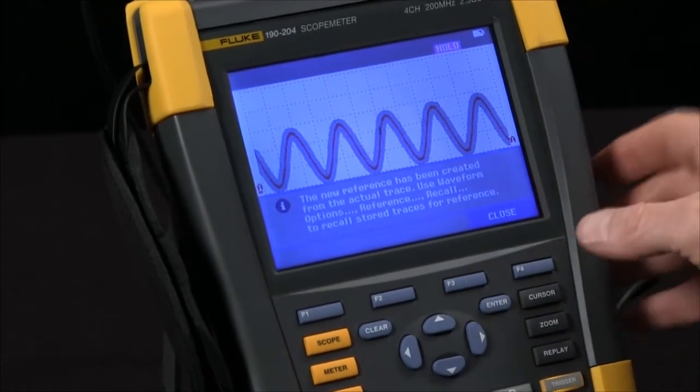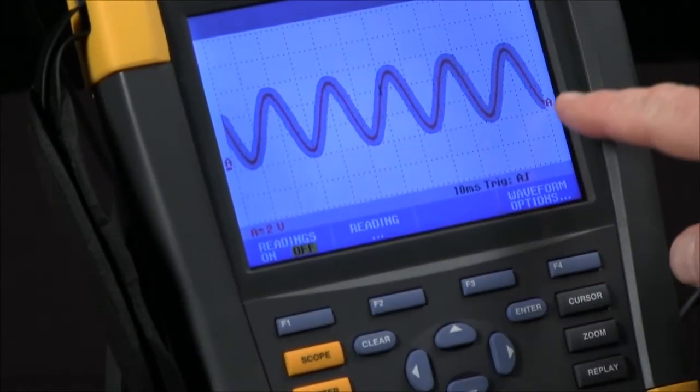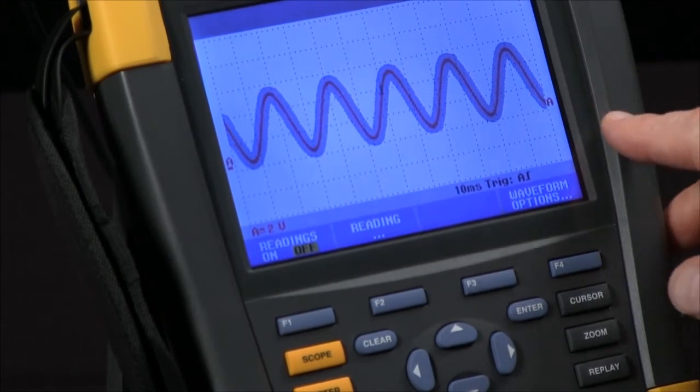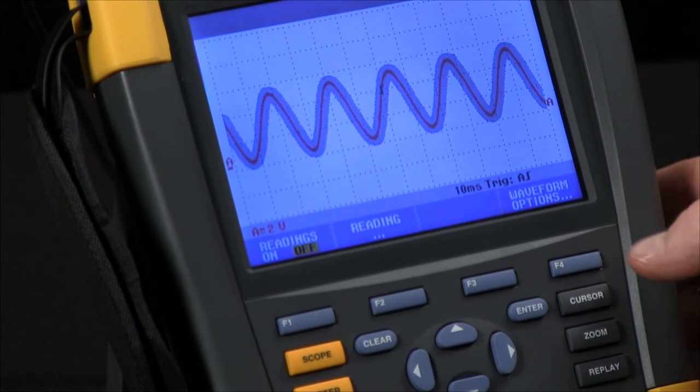This is actually going to surround my current trace. As you see, this gray area around the waveform, that's the envelope that I'm going to use for capturing anomalies.